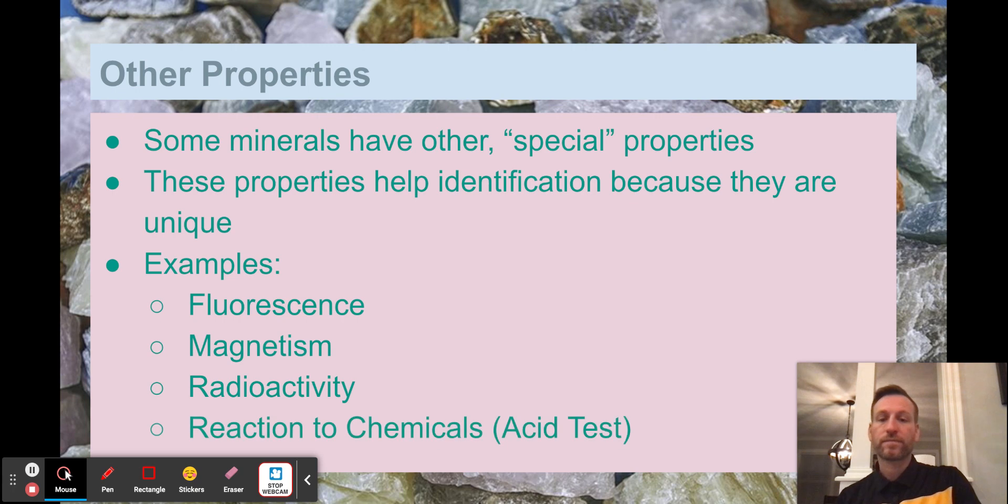And then lastly, there are some minerals that have reaction to certain chemicals. Okay. The test is called an acid test. And this is actually a pretty common test that geologists would do on certain minerals. So for instance, number four and five in your guys's sets, they're very, very close to each other. And one way to help tell them apart is by just putting a couple of drops of vinegar on them, because for one of them, and I'm not going to tell you which one, but for one of them, the vinegar will kind of bubble up.